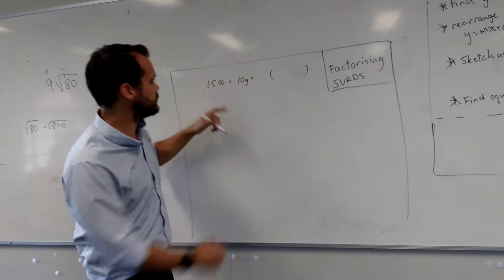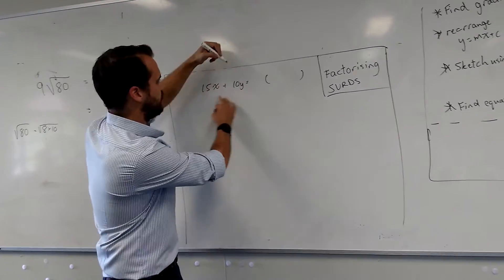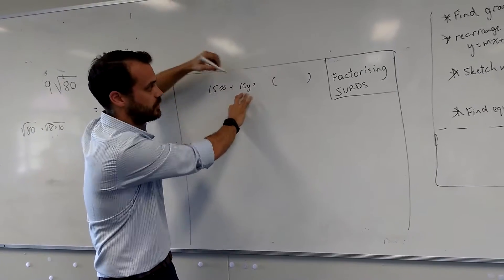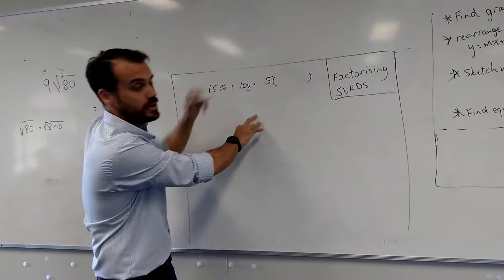You've put it into brackets and said, what's the common factor here? So the common factor of 15x and 10y is 5. 5 can go outside the brackets,